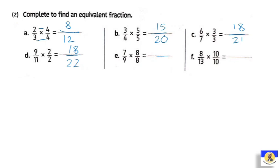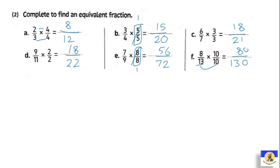Seven over nine multiplied by eight: seven by eight equals fifty-six, and nine by eight equals seventy-two. Eight over thirteen multiplied by ten: eight by ten equals eighty. For thirteen by ten — put zero outside and thirteen by one equals thirteen, so the answer is one hundred thirty. Remember, when we do up and down by the same number, five over five acts like one, and eight over eight also means one — this is called the multiplicative identity. Multiplying by it gives us the equivalent fraction.